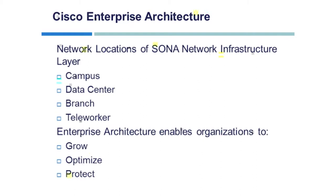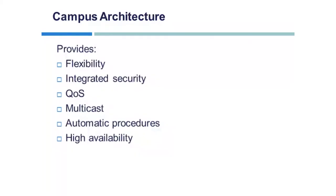This architecture offers network-wide integration across teleworkers, branches, WAN, and campus data centers, offering employees secure access to services, processes, and tools. Campus architecture provides flexibility to add IP security, MPLS VPNs, identity and access management, and VLANs to compartmentalize access. It also includes integrated security, Quality of Service (QoS), multicast for optimized bandwidth consumption, automatic procedures for reconfiguring network paths when failures occur, and high availability with a resilient multi-layer design and redundant hardware and software features.